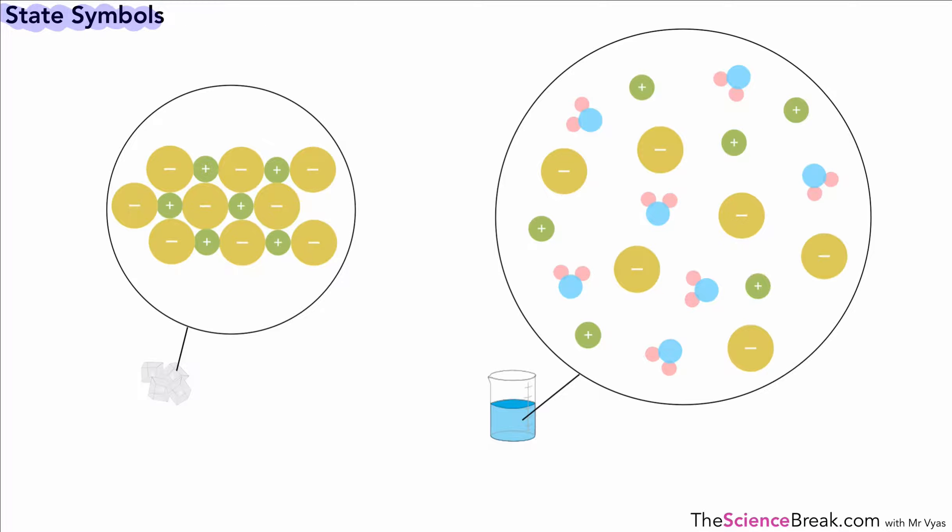What we're looking at now is state symbols. State symbols are basically abbreviations to say whether a substance is a solid, a liquid, or a gas. We just use the letters as shown on the screen: S for solid, L for liquid, and G for gas. There is one more which we're going to look at.